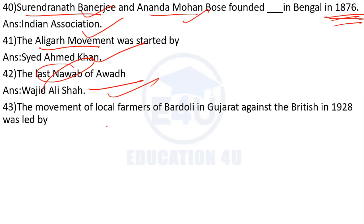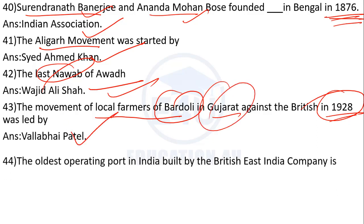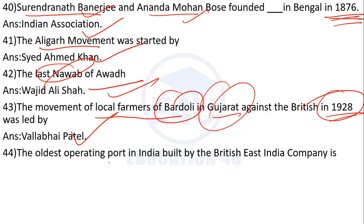The movement of local farmers of Bardoli in Gujarat against the British in 1928 — the Bardoli Satyagraha was in 1928. It was led by Sardar Vallabhbhai Patel. The oldest operating port in India was built by the British East India Company, and the answer is Kolkata port.